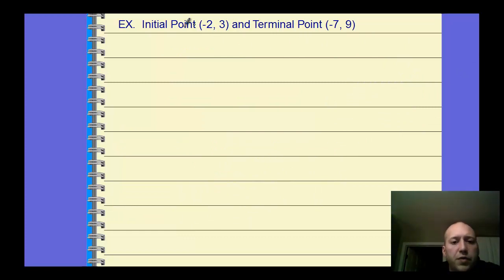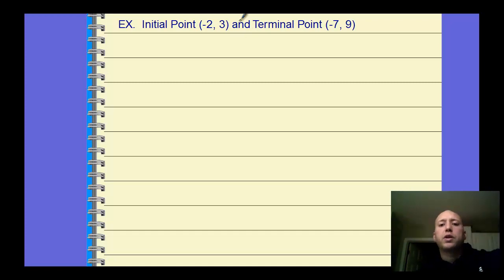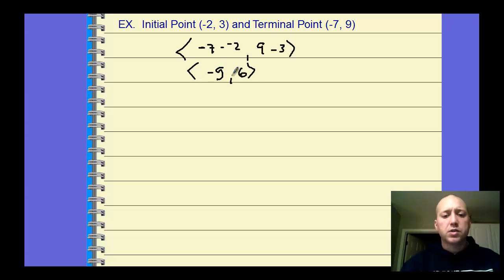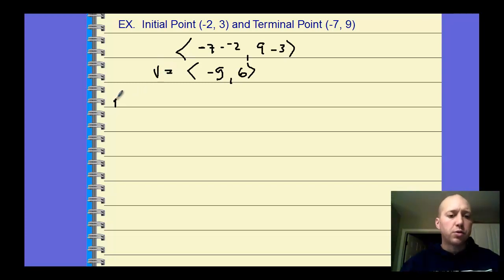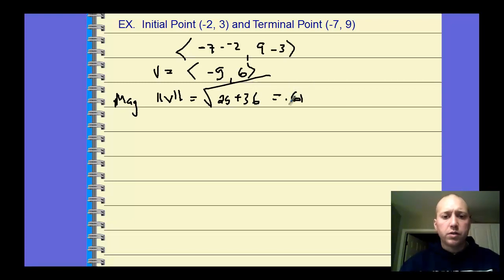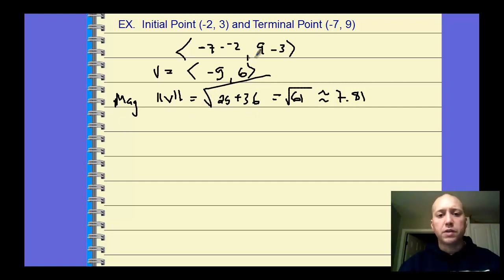Here's another example: given an initial point of (−2, 3) and a terminal point of (−7, 9). First, find the component form: −7 minus −2, and then 9 minus 3, which gives us ⟨−5, 6⟩. That's the component form. Then to find the magnitude of vector V, we take the square root of (−5)² plus 6², which is 25 plus 36, giving us the square root of 61, approximately 7.81.